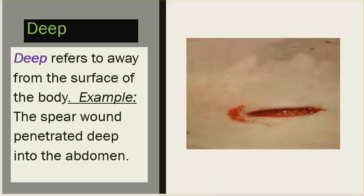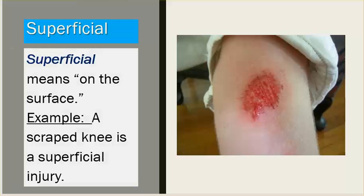Deep refers to away from the surface of the body. Example: the spear wound penetrated deep into the abdomen. Superficial means on the surface. Example: a scraped knee is a superficial injury.